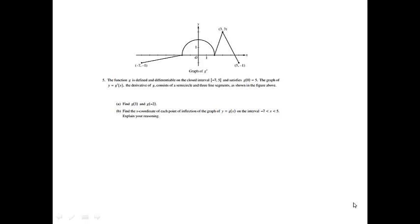Problem 5. The function g is defined and differentiable on the closed interval negative 7 to 5 and satisfies g of 0 equals 5. The graph of y equals g prime, the derivative of g, consists of a semicircle and three line segments as shown in the figure above.